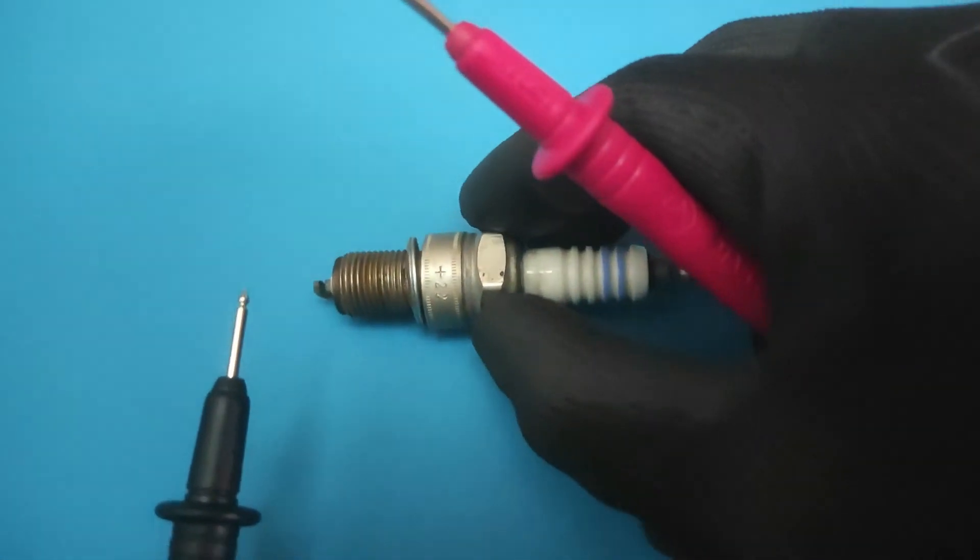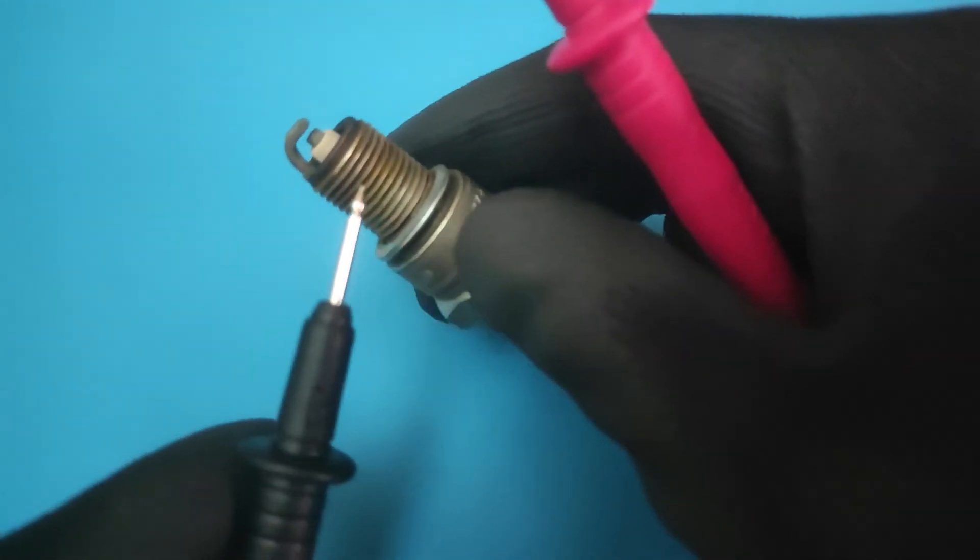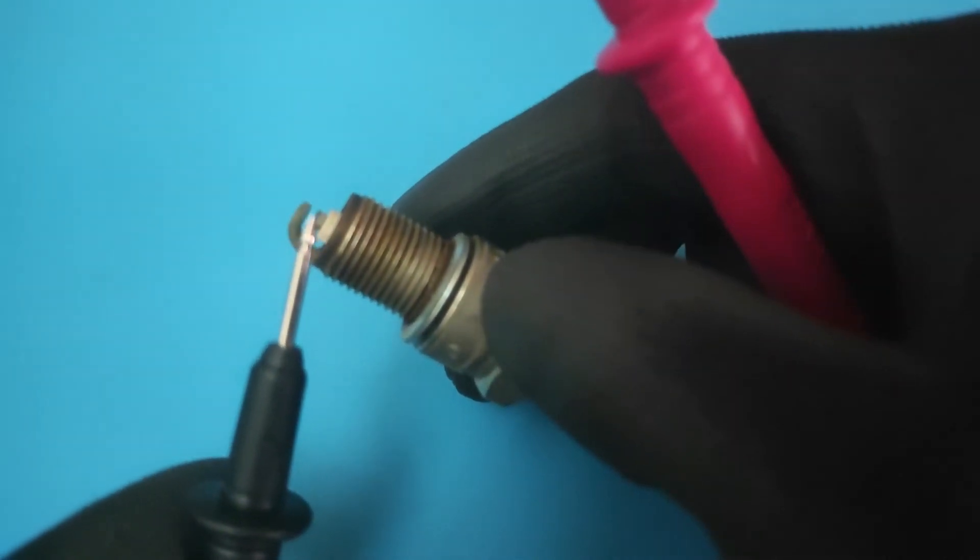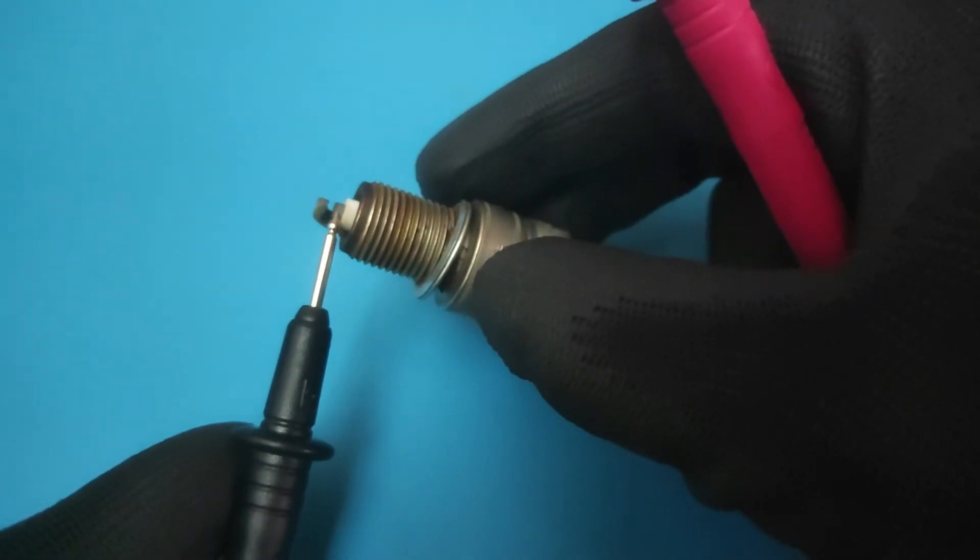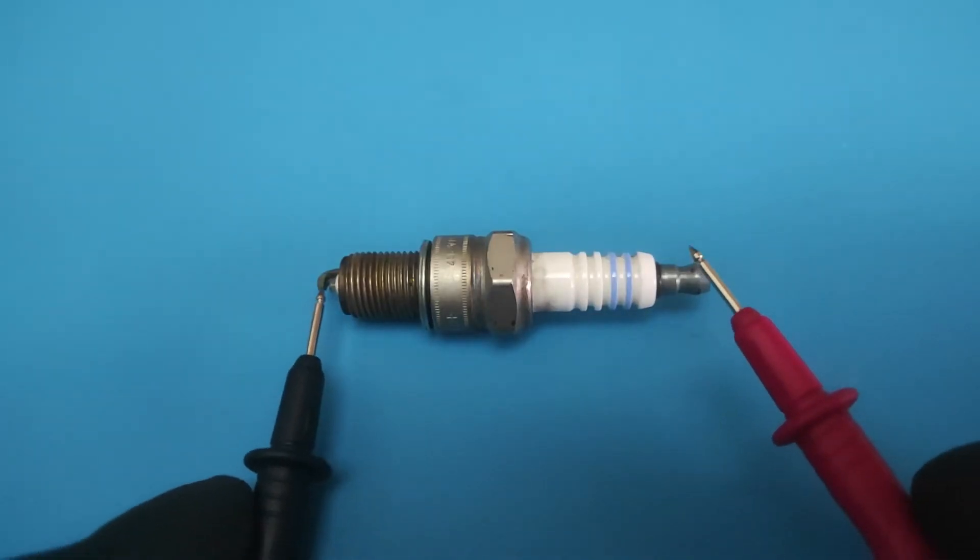For the other probe, you want to place it on the copper core center electrode, which is the thin rod coming from within the spark plug. It should look like this.